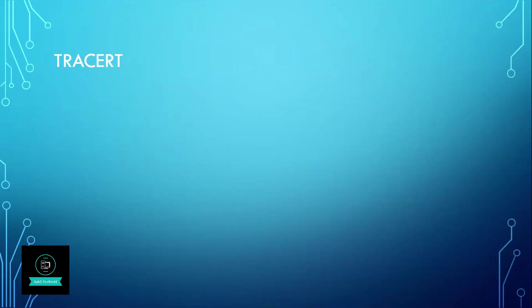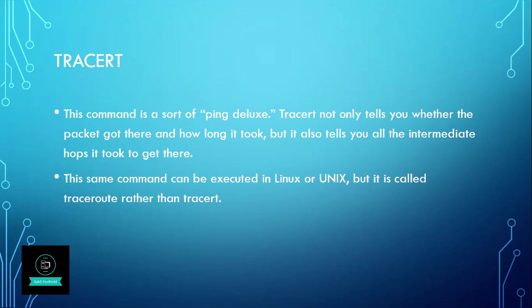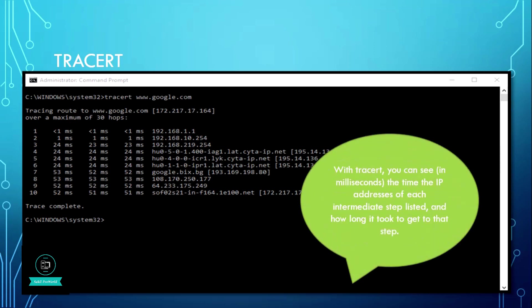Our next command is tracert. This command is a sort of ping deluxe. Tracert not only tells you whether the packet got there and how long it took, but it also tells you all the intermediate hops it took to get there. This same command can be executed in Linux or Unix but it is called traceroute rather than tracert. With tracert you can see in milliseconds the IP address of each intermediate step listed and how long it took to get to that step.